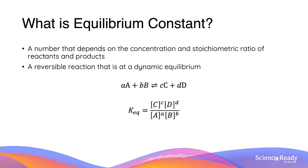The equilibrium constant is really just a number that depends on the concentration and stoichiometric ratio of reactants and products in a reversible reaction that is at a dynamic equilibrium. Just to remind you, a dynamic equilibrium is the state at which a reversible reaction has equal forward and reverse reaction rates.